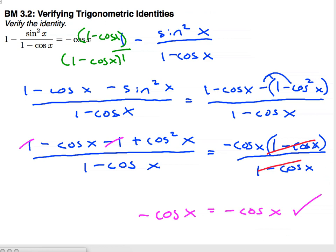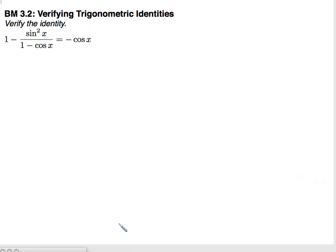Now what I'm going to do is show you an alternate way. Using a similar trick, 1 minus sine squared x over 1 minus cosine x.